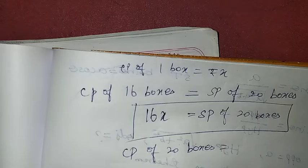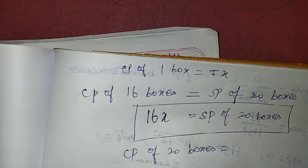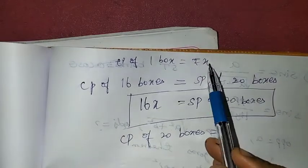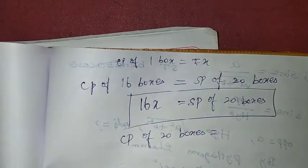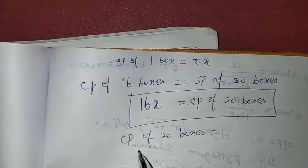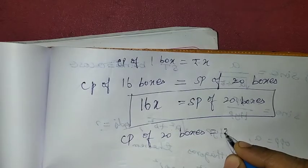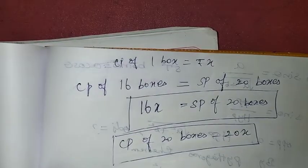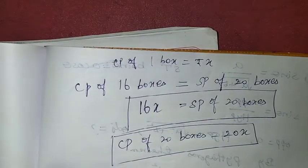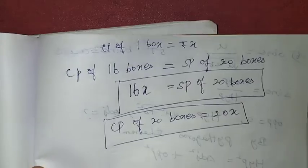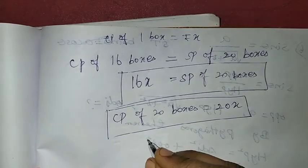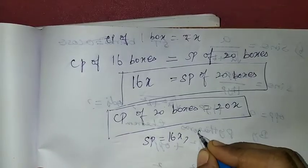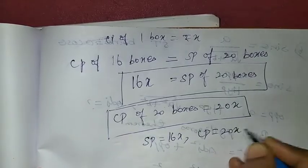The selling price of 20 boxes is 16x, and the cost price of 20 boxes is 20x. So CP is 20x and SP is 16x. Since CP is greater than SP, there is a loss.